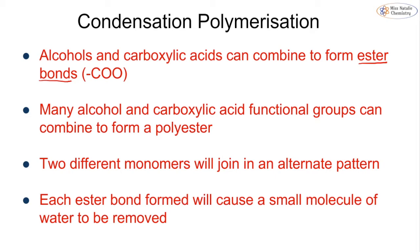We're combining these to give us the COO functional group. We can have lots of these functional groups joining together to form a polyester by using two different monomers in an alternating pattern. Every time we make an ester bond, a small molecule of water is removed — which is why we call this condensation polymerization. Unlike addition polymerization, which produces only one product, this has a slightly lower percentage yield but still gives us the polymer we want.